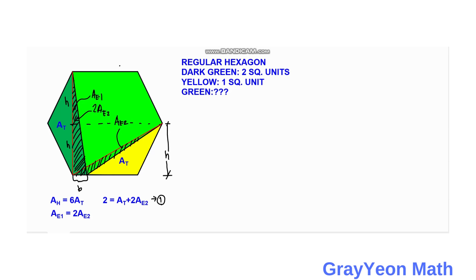Next we focus on the yellow region. The yellow region has an area of 1 square unit. This equals area T — the triangle formed by two lines and the red line — but we need to subtract area E2 to form the yellow region. So area T minus area E2 equals 1. This is our second equation.